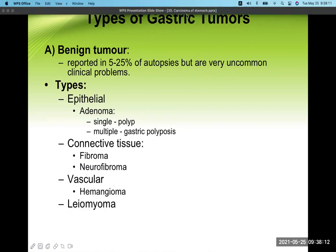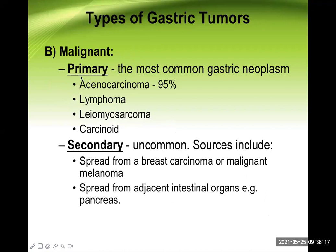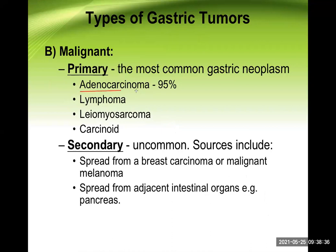On the other hand, the second type of gastric tumor are malignant. They are again divided into primary and secondary. Primary means the malignant tumor developed right there in the stomach, and secondary means it has reached the stomach from some other source. The most common primary gastric malignancy is adenocarcinoma, occurring 95 percent of the time. Others may be lymphoma, leiomyosarcoma, or carcinoid.